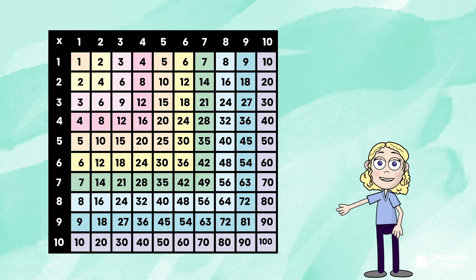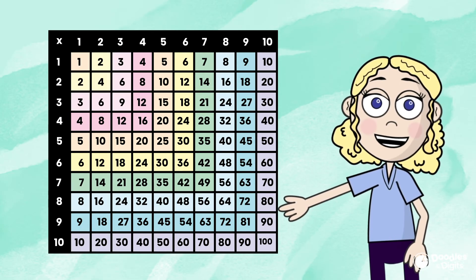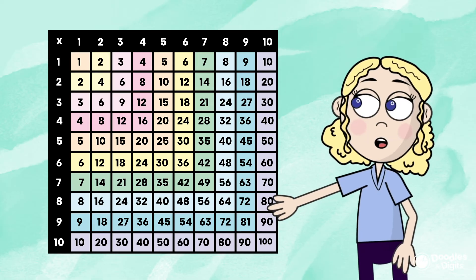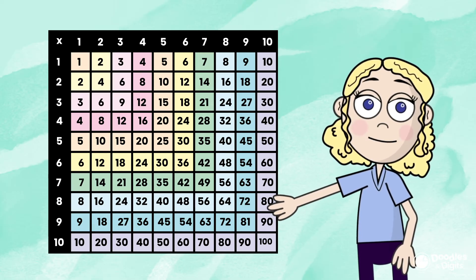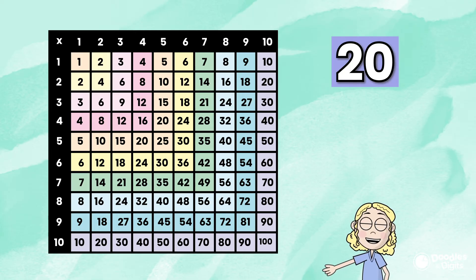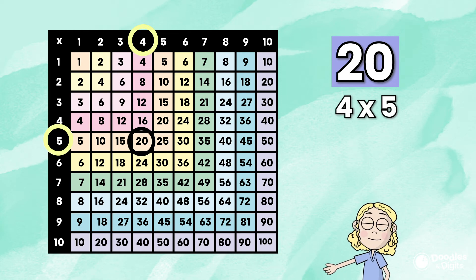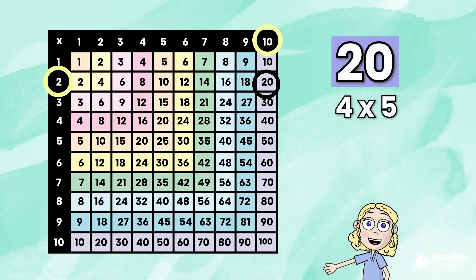Another tool that you can use is the multiplication chart. Look at this multiplication chart right here. This is a great tool because you can look on the multiplication chart to see what factors go into the number we're trying to find. For example, let's take the number 20. We're going to try to find 20 on the multiplication chart. Ah, here it is. These are two factors of 20. Here it is again. These are also two factors of 20. Do you see how a multiplication chart can be a helpful tool?